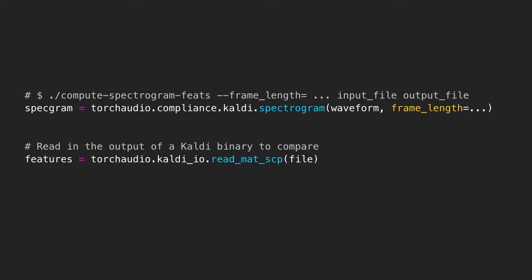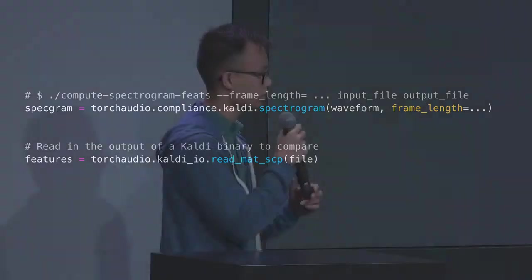Here's another code snippet showing how you can replace your Kaldi binary. You take the waveform read from the file before and compute a spectrogram here. This has the exact parameters that Kaldi binaries have. The only difference is you're running it online instead of using a binary.